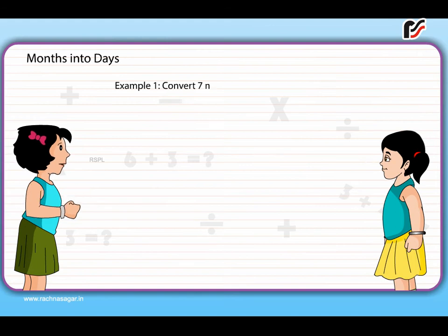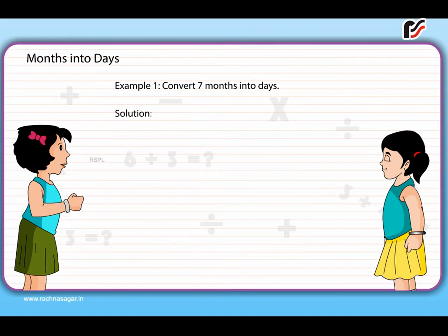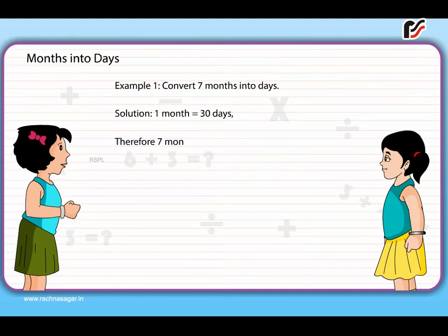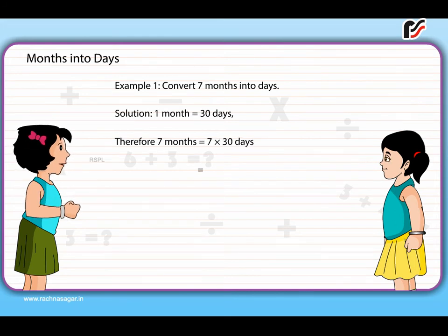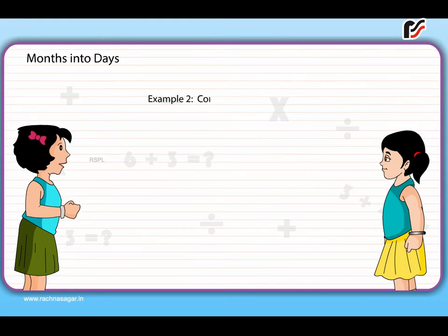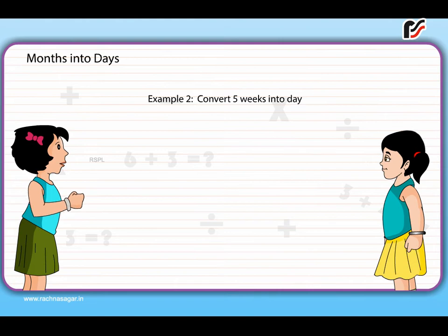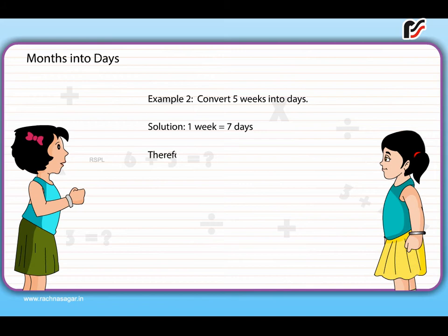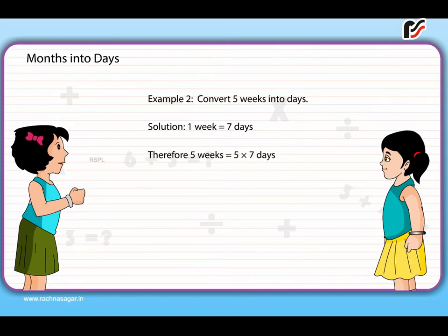Example 1: Convert 7 months into days. Solution: 1 month = 30 days, therefore 7 months = 7 × 30 = 210 days. Example 2: Convert 5 weeks into days. Solution: 1 week = 7 days, therefore 5 weeks = 5 × 7 = 35 days.